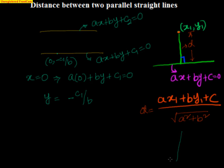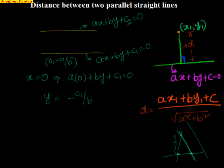If we look at the actual graph, we have two parallel lines. We are taking the Y-intercept of one line — the point where X = 0 — which gives us the point (0, −C1/B). Now it's like our earlier problem: we have a point and we want to find its perpendicular distance to the other line. We substitute this point into the perpendicular distance formula: A·X1 + B·Y1 + C by √(A² + B²), where X1 = 0 and Y1 = −C1/B.